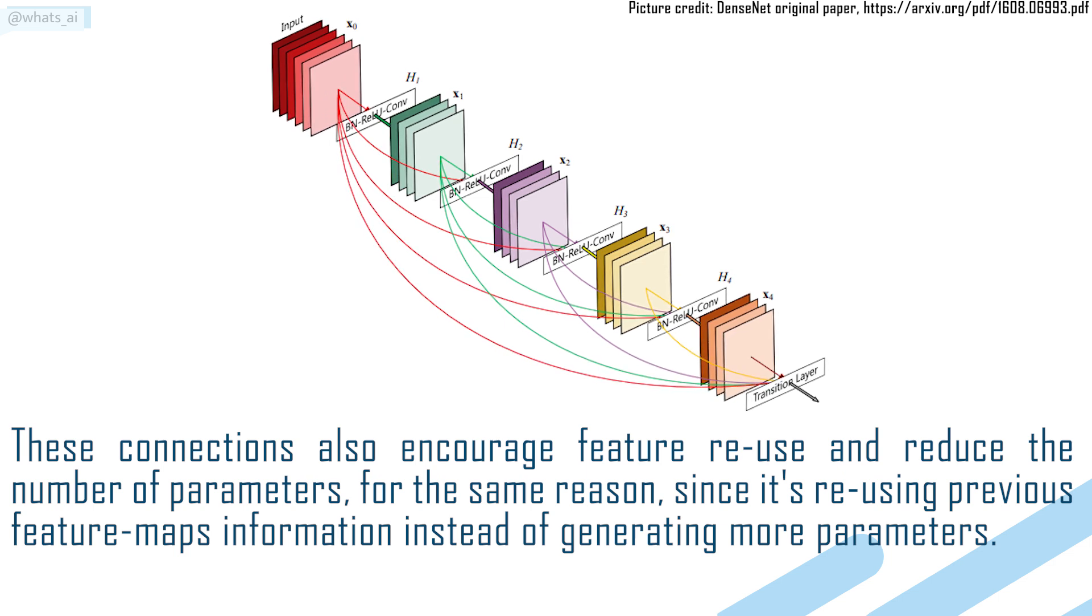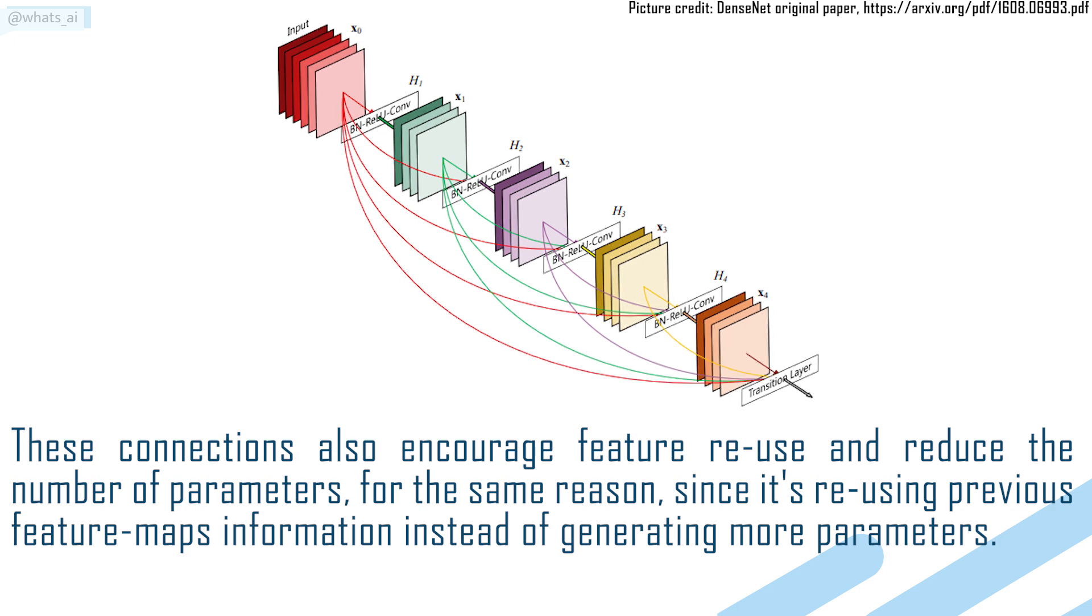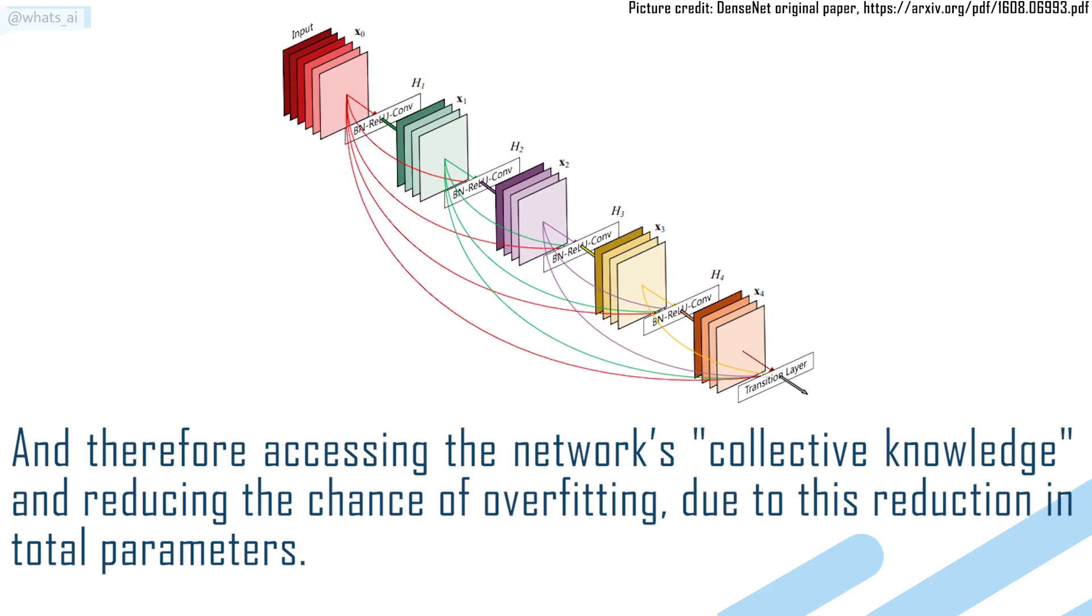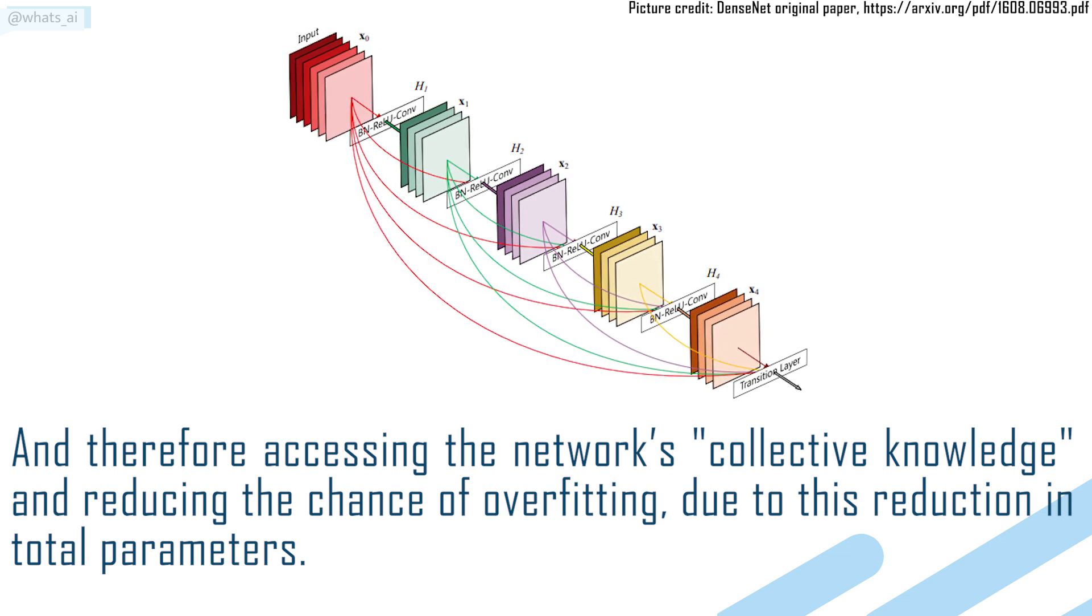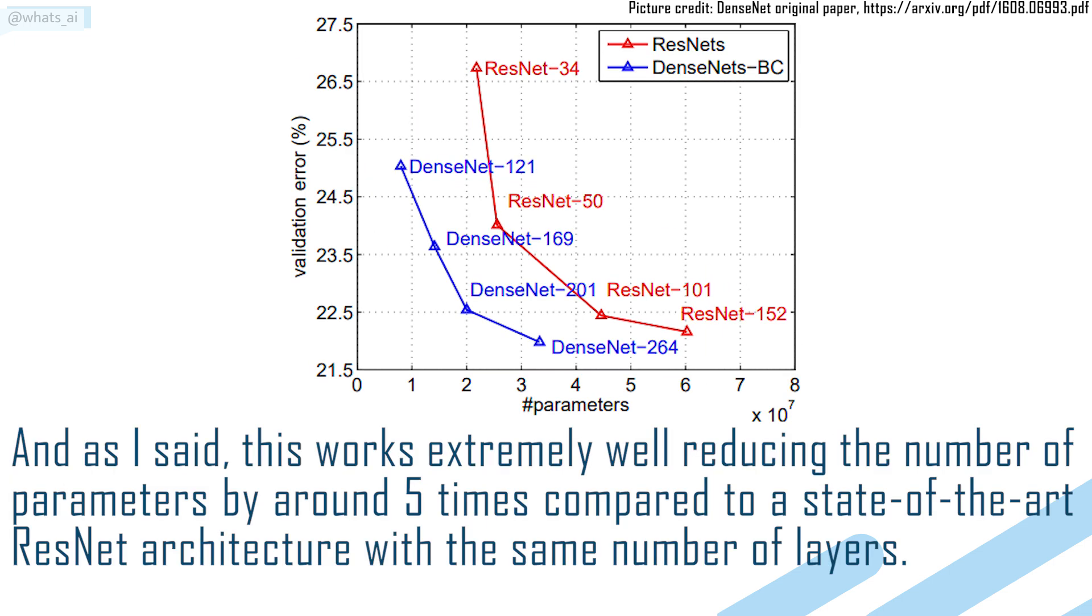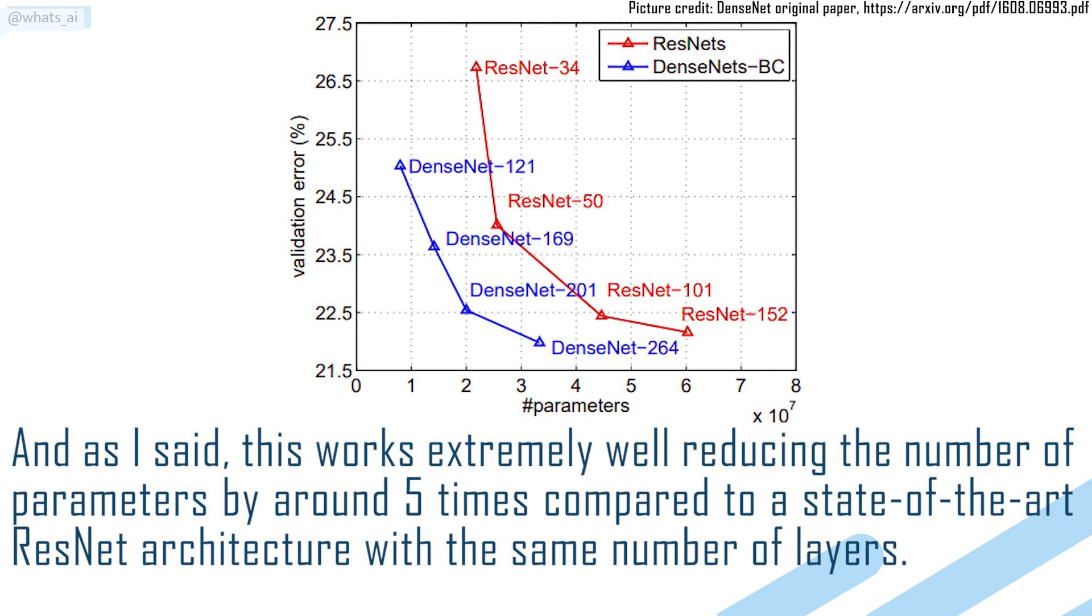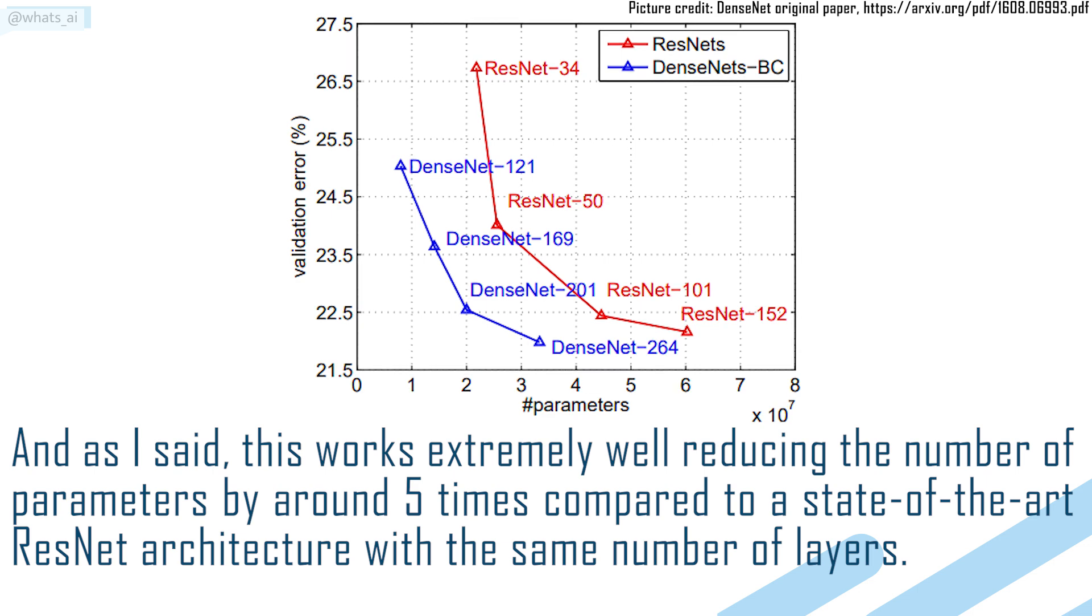For the same reason, since it's reusing previous feature map information instead of generating more parameters, and therefore accessing the network's collective knowledge and reducing the chance of overfitting due to this reduction in total parameters. And as I said, this works extremely well, reducing the number of parameters by around 5 times compared to a state-of-the-art ResNet architecture with the same number of layers.